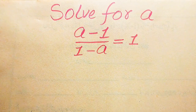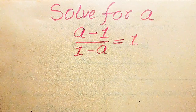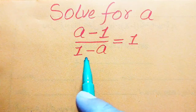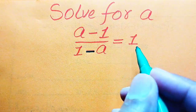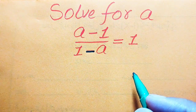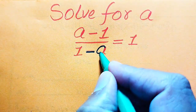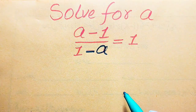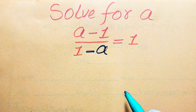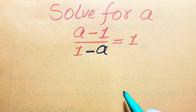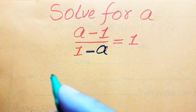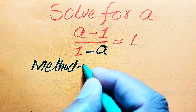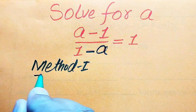Hello everyone. How to solve this problem: for what values of a is (a minus 1) divided by (1 minus a) equal to 1? We solve this problem for all values of a. First, we need to find all the roots of this equation, and at the end we will verify which roots are solutions and which are extraneous roots. We will solve this problem using two methods.